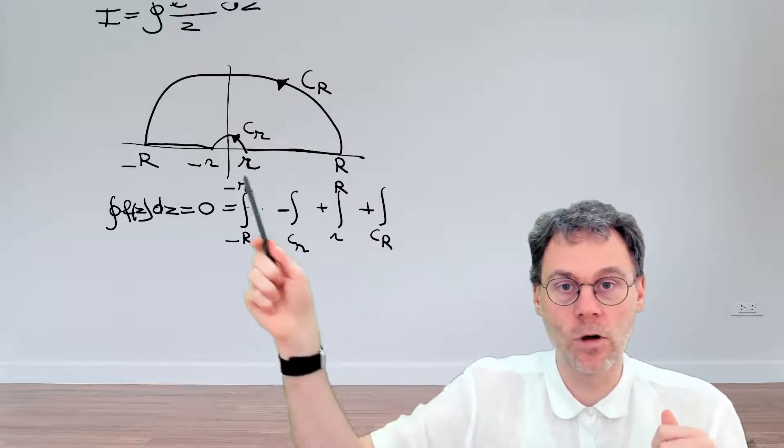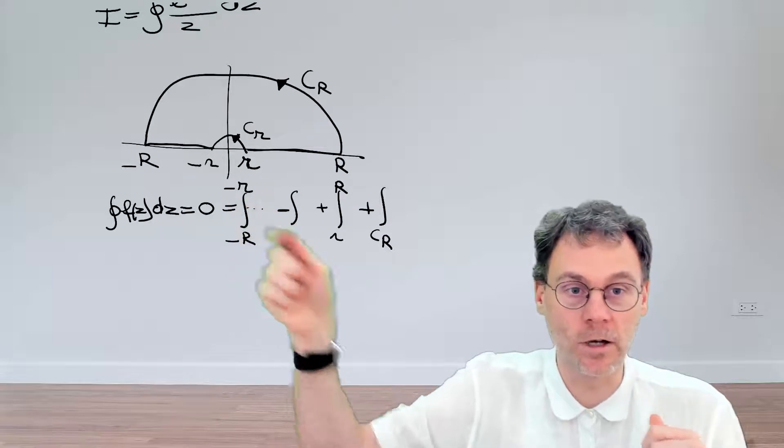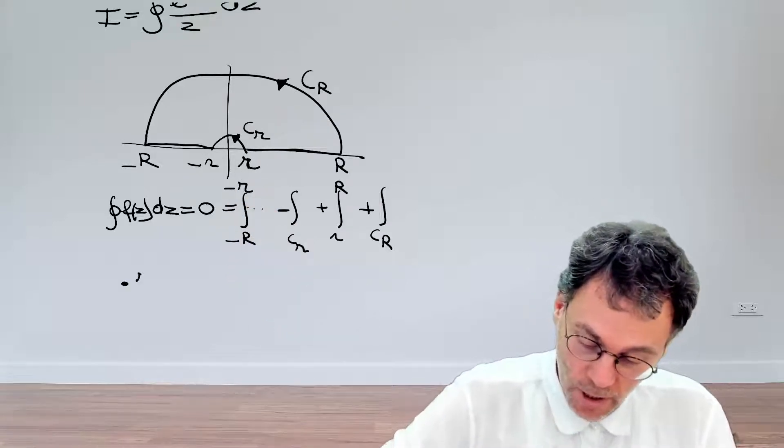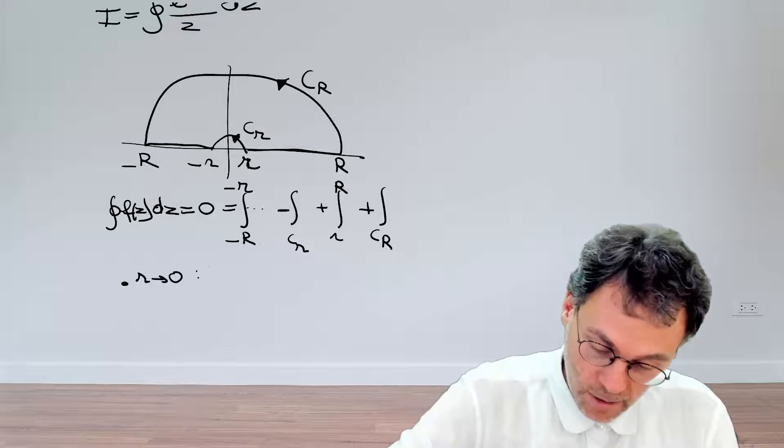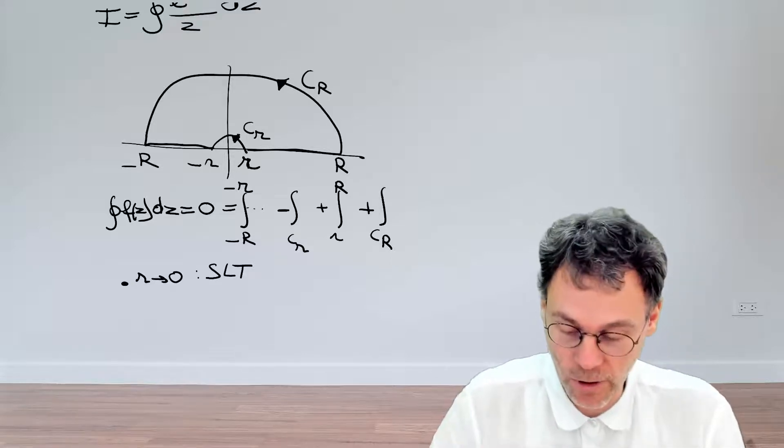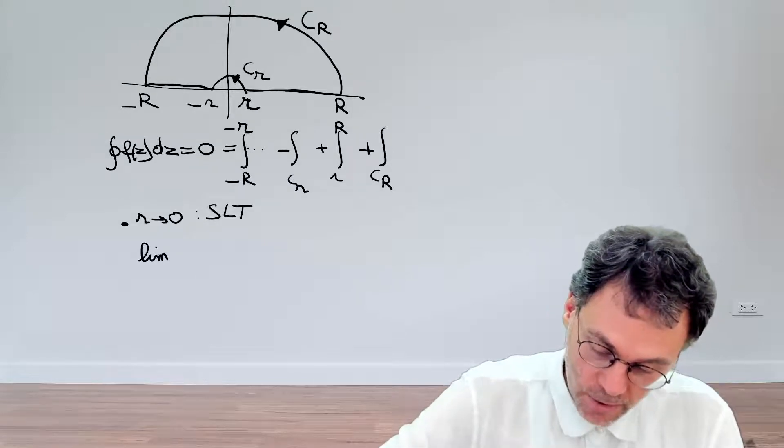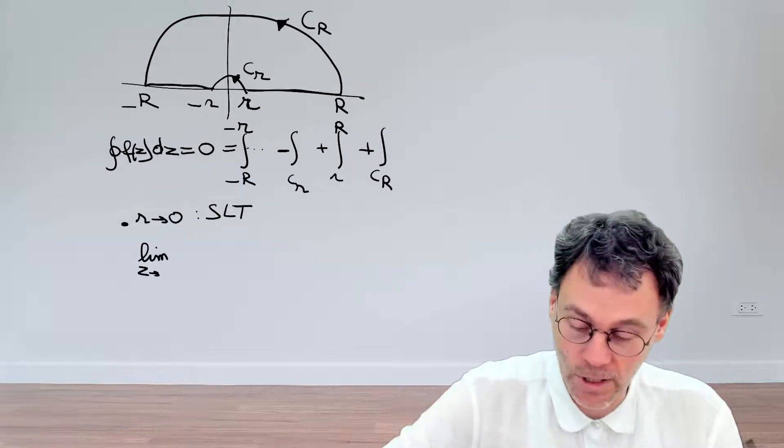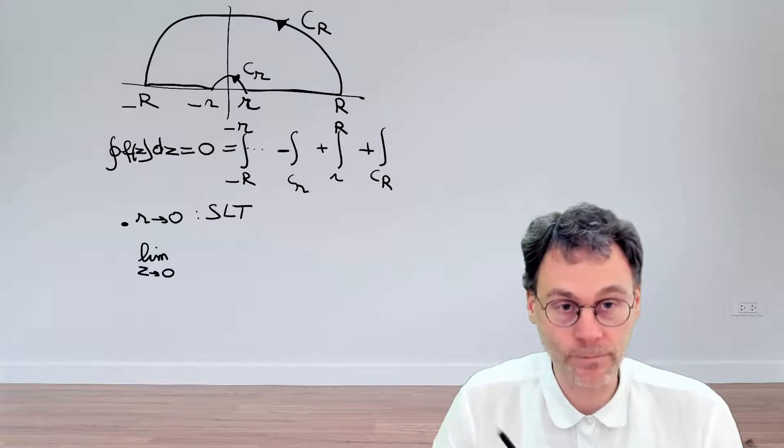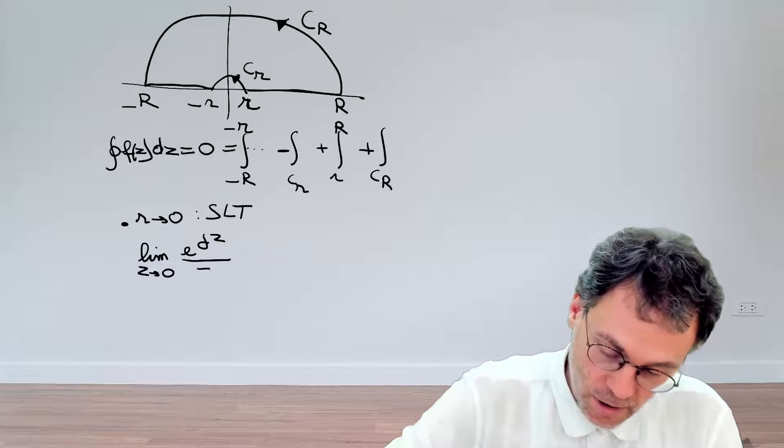Let's focus now on the two circular segments. First of all, taking the limits of little r going towards 0. Now, if we do that, then we need to look at the small limit theorem. That's, of course, the thing to do here. For the small limit theorem,